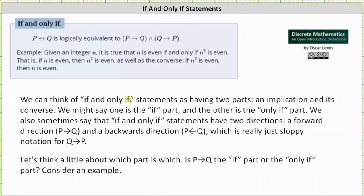We can think of if and only if statements as having two parts, an implication and its converse. We might say one is the if part and the other is the only if part. We also sometimes say that if and only if statements have two directions. A forward direction, meaning if P then Q, and a backwards direction, where we change the direction of the arrow, which is really sloppy notation for if Q then P.